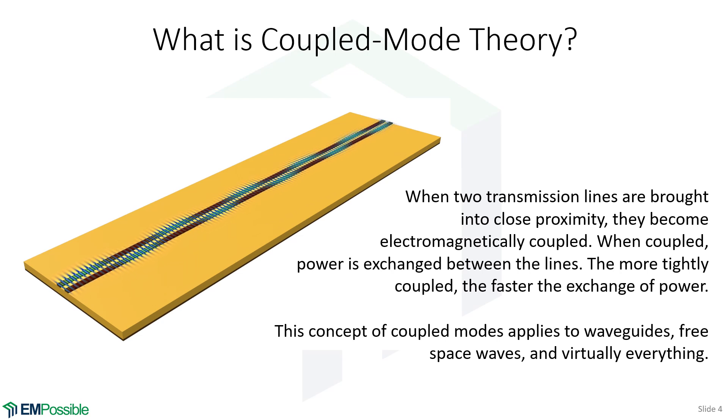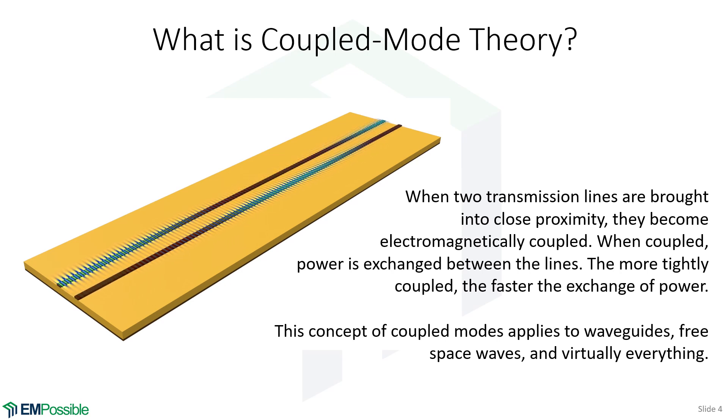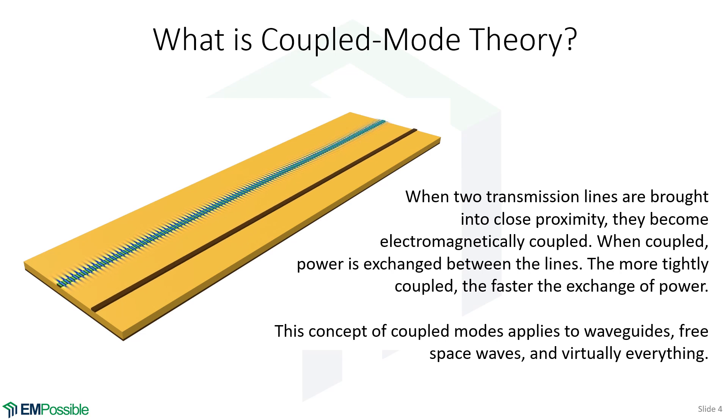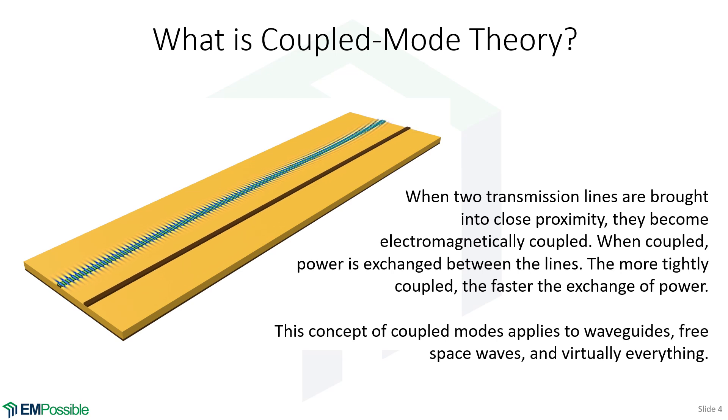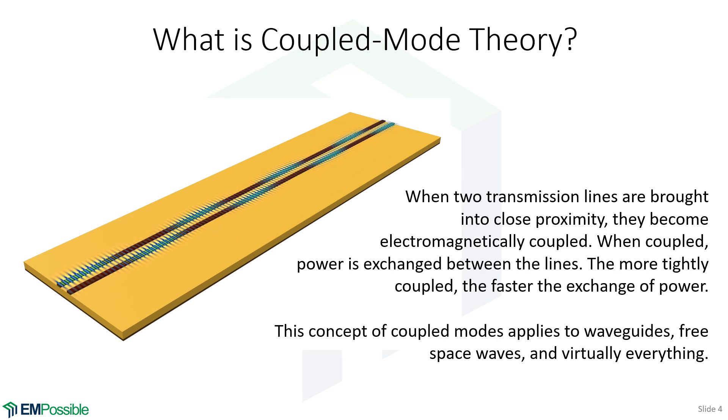Asymmetries and losses and other things can prevent 100% power transfer, but that's coupled mode theory. Now it doesn't have to be two waveguides—it can be an external wave and a waveguide, two external waves, two waveguides. Anytime there are two electromagnetic modes, it's always possible to get those coupled when they're in close proximity so that they can exchange power periodically.